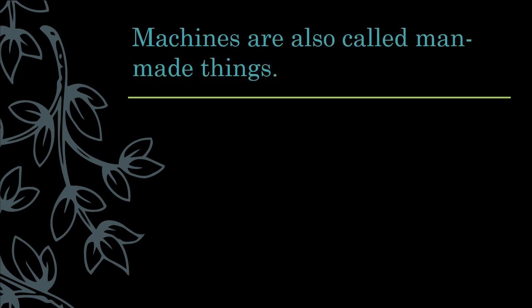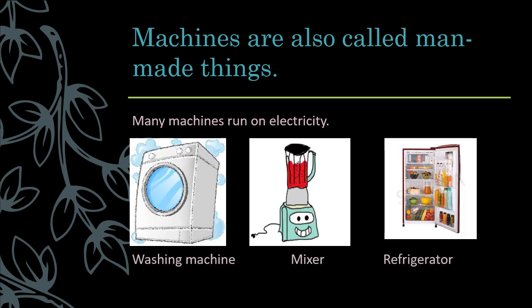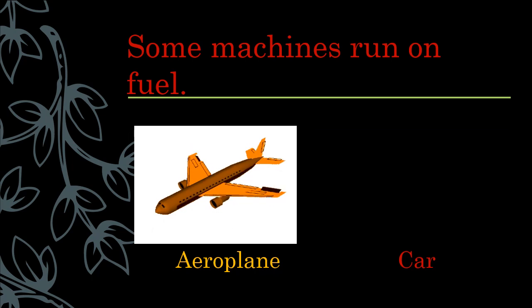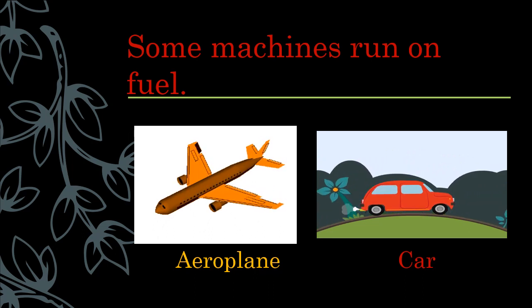Machines are also called man-made things. Many machines run on electricity. For example, washing machine, mixture, refrigerator. Without electricity, these machines cannot work. Some machines run on fuel. Fuel means petrol or diesel. For example, aeroplane, car. Without fuel, these machines cannot work.